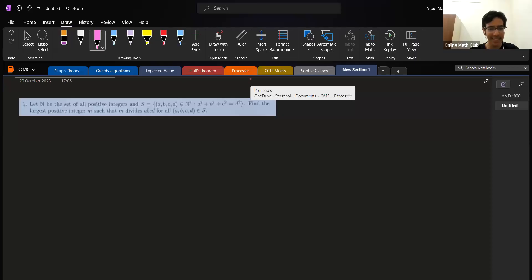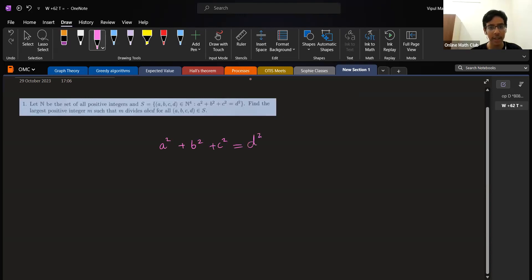Okay, hello people. This is P1 from this year's RMO. It gives us this equation where we need to find solutions to a squared plus b squared plus c squared equals d squared. Basically, across all possible solutions, you want to find the largest m such that m divides abcd for all such solutions a, b, c, d, where these are all natural numbers.